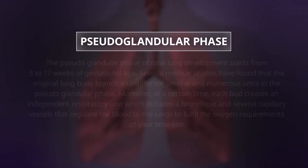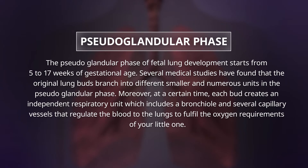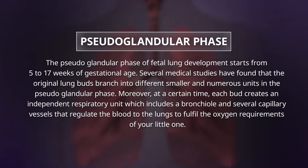The pseudoglandular phase of fetal lung development starts from 5 to 17 weeks of gestational age. Several medical studies have found that the original lung buds branch into different, smaller, and numerous units in the pseudoglandular phase. Moreover, at a certain time, each bud creates an independent respiratory unit, which includes a bronchial and several capillary vessels that regulate the blood to the lungs to fulfill the oxygen requirements of your little one.